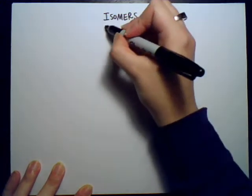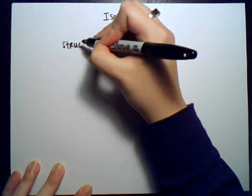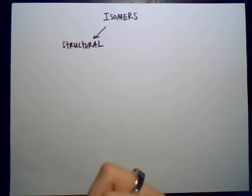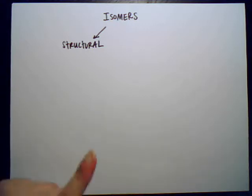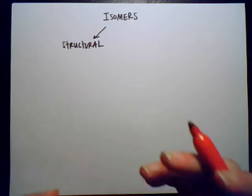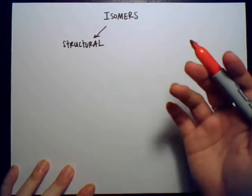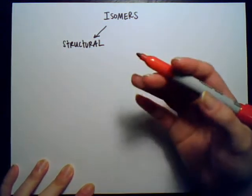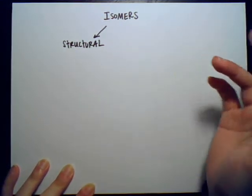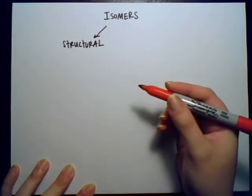The first kind, and maybe the simplest to understand, is structural isomers. Structural isomers are simply those which have the same molecular formula but their actual attachment, bonding, and hence structure differs. Because of this, structural isomers differ in their melting points, boiling points, chemical properties, and reactivity. They are completely different molecules that just happen to have the same molecular formula.